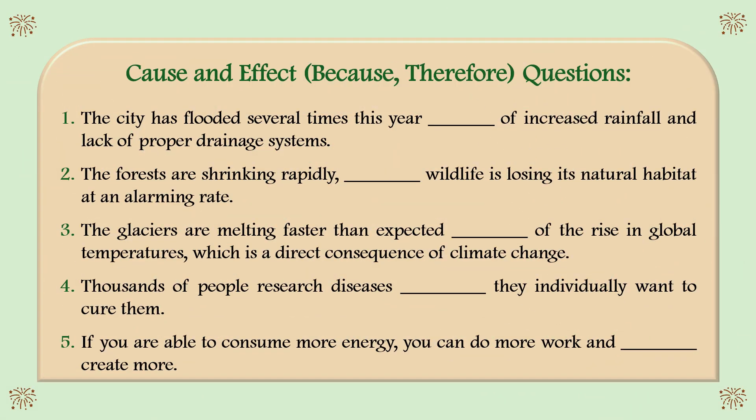Let's practice some more. Read the sentences and fill in the blanks correctly. One: the city has flooded several times this year _____ of increased rainfall and lack of proper drainage systems. Two: the forests are shrinking rapidly, _____ wildlife is losing its natural habitat at an alarming rate.